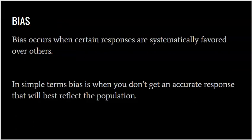Bias occurs when certain responses are systematically favored over others. In simple terms, bias is when you don't get an accurate response that will best reflect the population. Anything that allows your sample mean to be very far away from your population mean — way too high or way too low — or your sample proportion to be really high or really low from the true population proportion, is giving you bad data that's not going to represent the population like you would like.